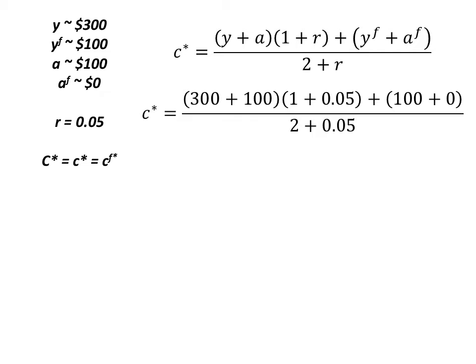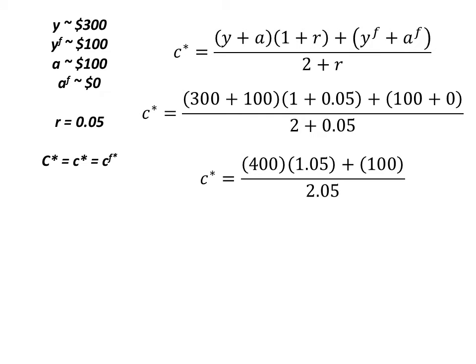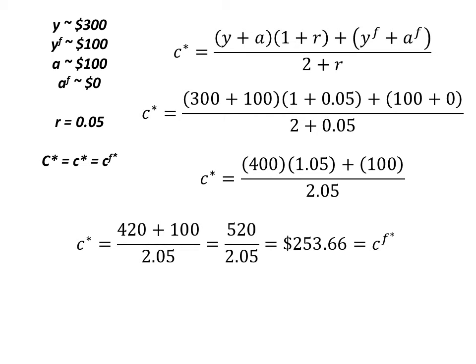We plug in 300 for current income, 100 for current wealth, 5% for our interest rate, and 100 for future income. Simplifying: 400 times 1.05 plus 100 divided by 2.05, which gives us 420 plus 100 divided by 2.05, equal to 520 divided by 2.05, giving us $253.66 as our current consumption. Since our agent perfectly consumption smooths, current consumption equals future consumption, both equal to $253.66.